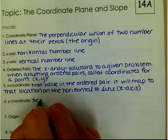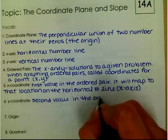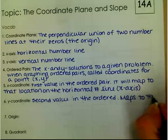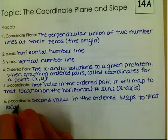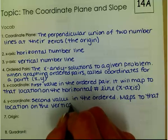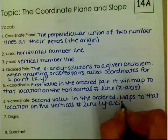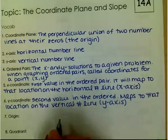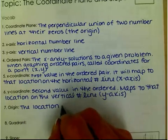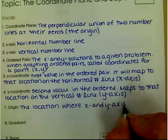The y-coordinate is the second value in the ordered pair, and that maps to that location on the vertical number line. The origin is the location where the x and y-axis meet or intersect.